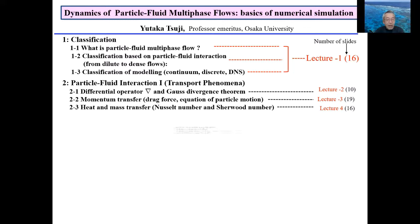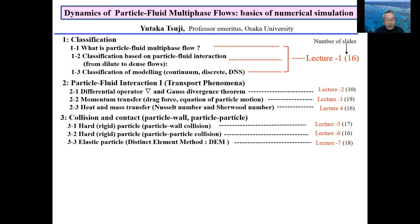Chapter 3 consists of Lectures 5, 6, and 7, and describes the formulation of collision and contact of particle-to-wall and particle-to-particle. Methods of irregularity of particle-to-wall motion on the wall are also described in Lecture 5.